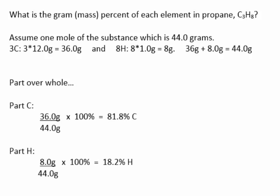Essentially, you're solving a part-over-whole problem. The whole being 44 grams, and the parts being the part of carbon and the part of hydrogen. So within that 44 grams, there's 36 grams of carbon, which relates to 81.8% carbon, and there's eight grams in the 44 grams, which relates to the hydrogen, which is 18.2% hydrogen.